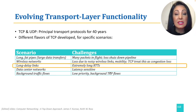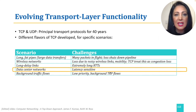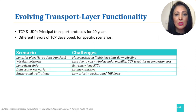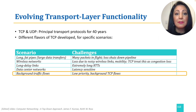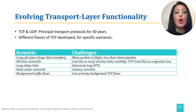Links experiencing long RTTs, data centers with their latency-sensitive use cases, and background traffic flows with lower priority traffic all have different needs and have used different flavors of TCP over the years to respond to those needs.